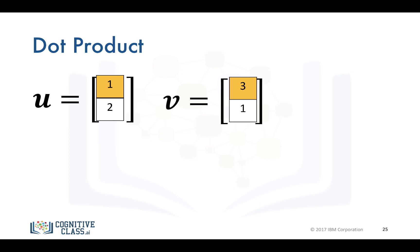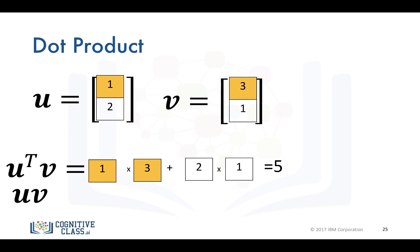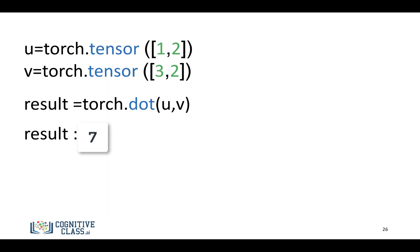Another really popular operation is the dot product. We have tensor U and tensor V, and the dot product is defined by taking the first elements of U and V and multiplying them together, then adding the product of the second elements of U and V to get the result. This extends to an arbitrary number of dimensions. In PyTorch, we use the torch function torch.dot, which produces the dot product.